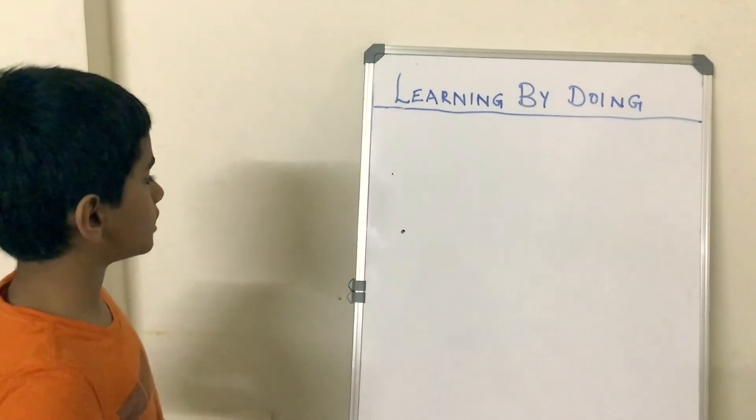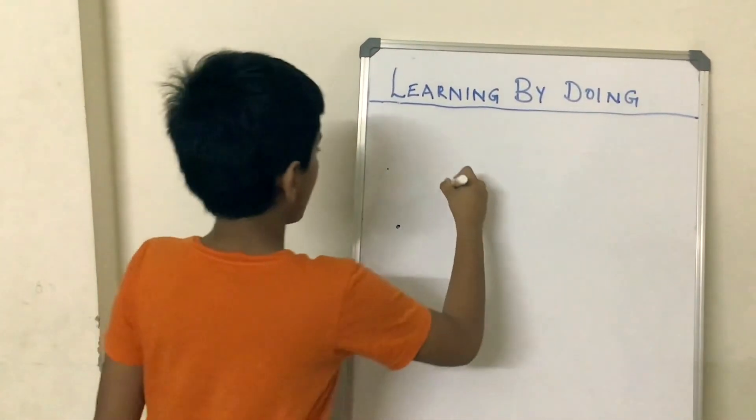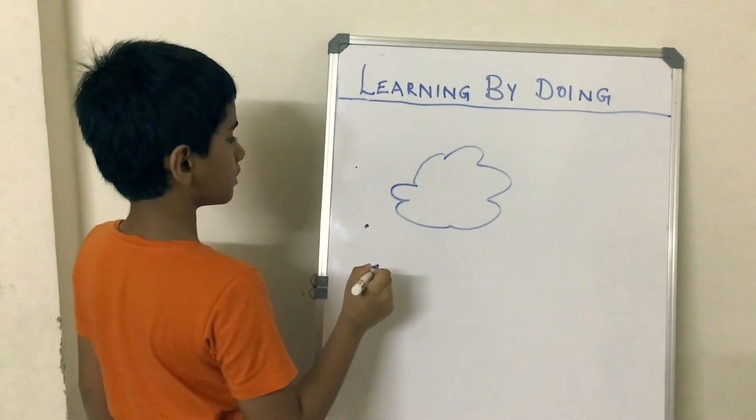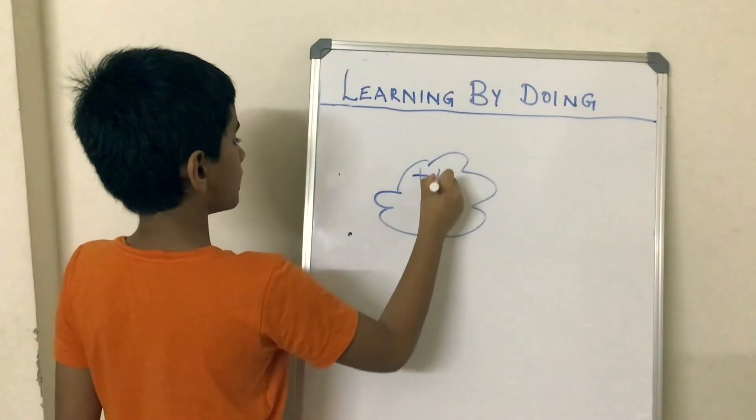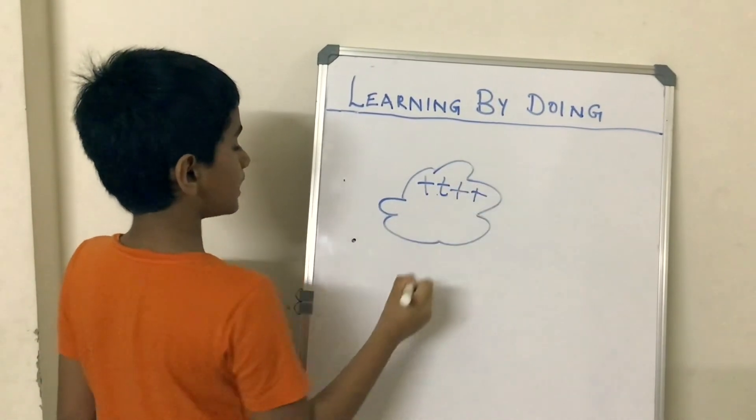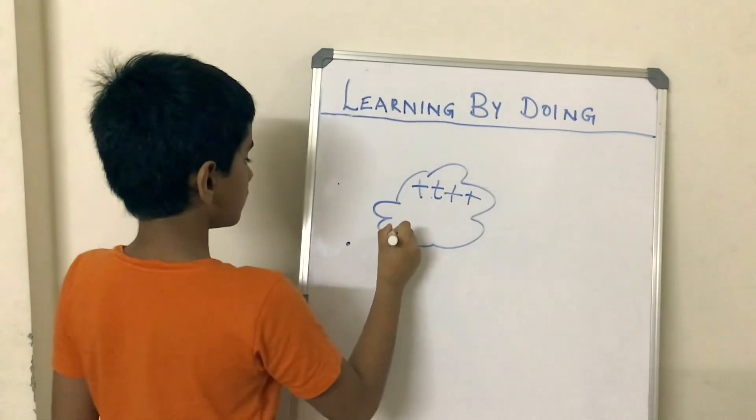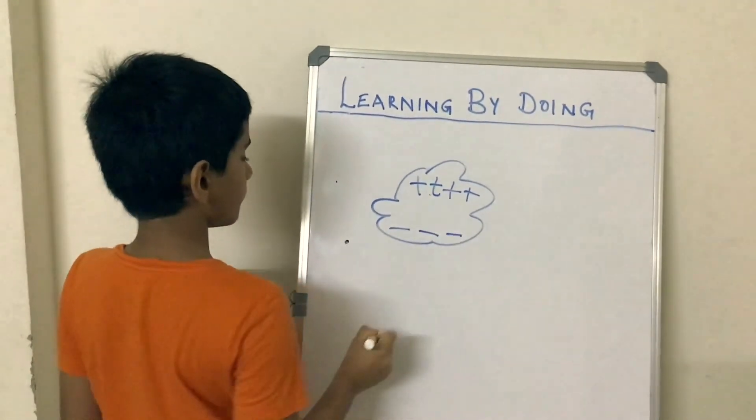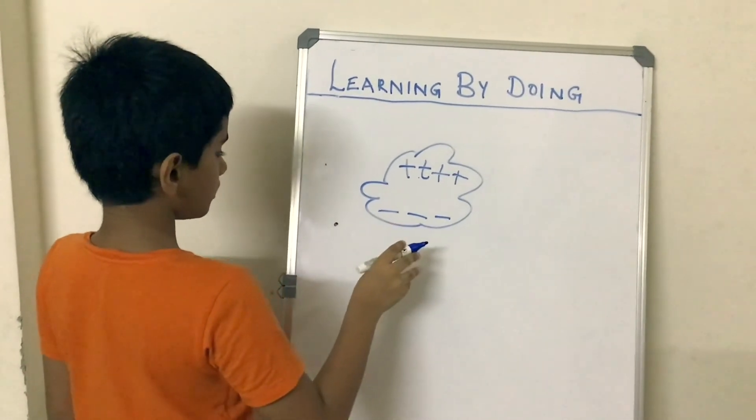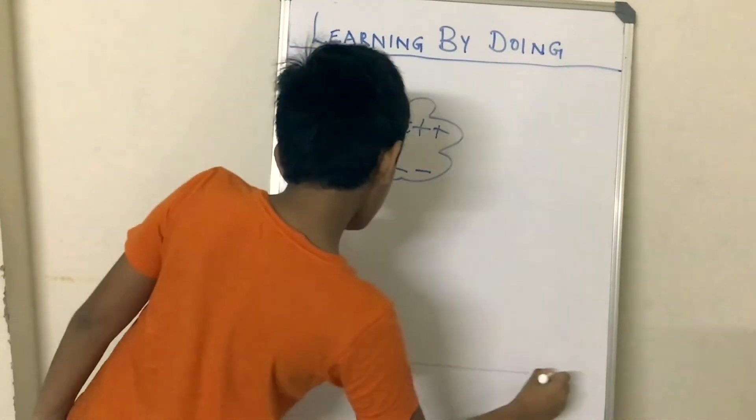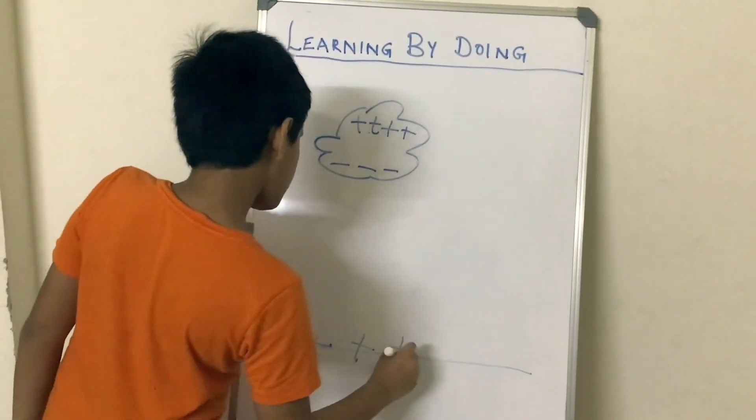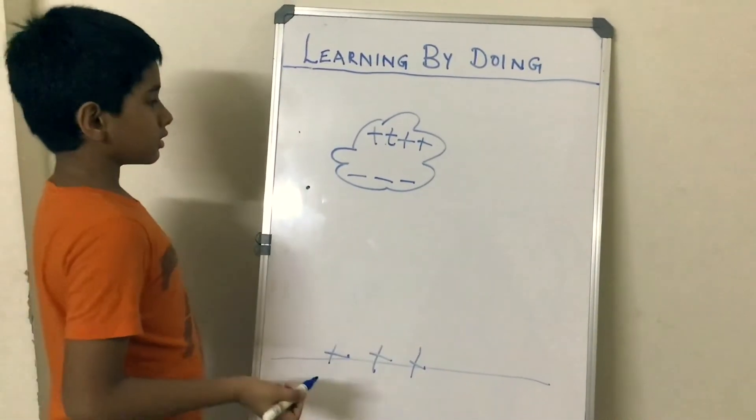It starts with lightning. In a cloud there are two types of charges: positive charge which accumulates on the top and negative charge which sinks to the bottom. So when a cloud flies over a place on the ground, there are positive charges.